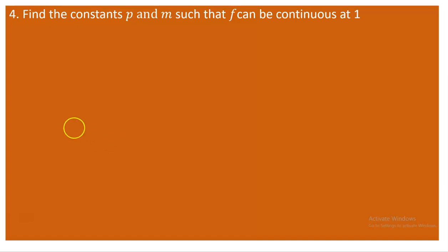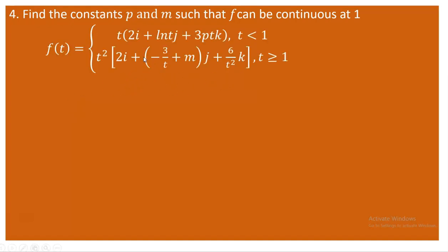So this is talking about continuity of the vector value function. This is a function you are having — f is defined like this. Basically, the function is broken at one. It is a piecewise function: for values of t less than one, the upper expression is used, and for values greater than or equal to one, the lower is used. Two variables p and m are introduced, and we are asked to find these values so that the vector value function can be continuous at t equal to one.